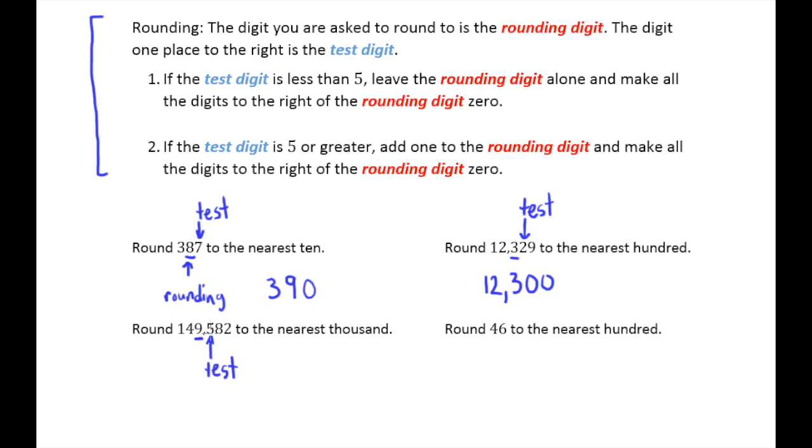Now my test digit is five, so I'm in scenario number two. And so it says add one to the rounding digit. Well, if you look at our rounding digit, what happens when you add one to nine? Well, it becomes ten, right? Well, there's not enough room in the place value for thousands. There's not enough room for both the one and the zero of ten. So what we do is we put a zero where the nine was. And then we're going to add one to the next digit over to the left. And then everything else becomes zero.